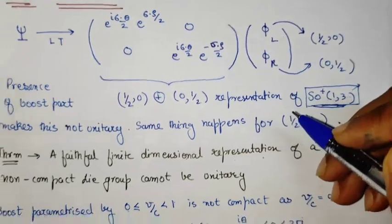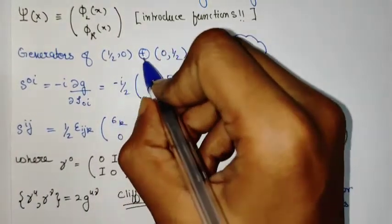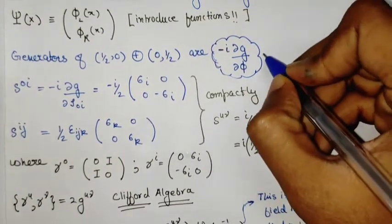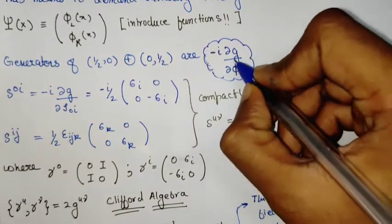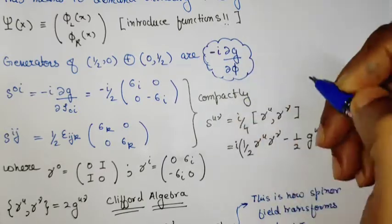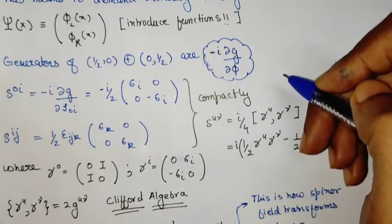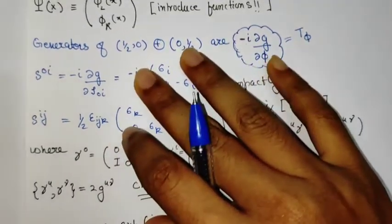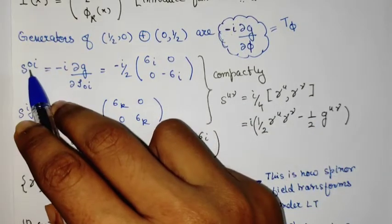With this understanding, we now try to find the generators of this direct product SU(2)×SU(2) group. This is straightforward because in the previous video we briefly discussed the Lie group viewpoint, where the generators are given by differentiating the group element with respect to the parameters with a minus-iota sign. This equals the generator T_a.